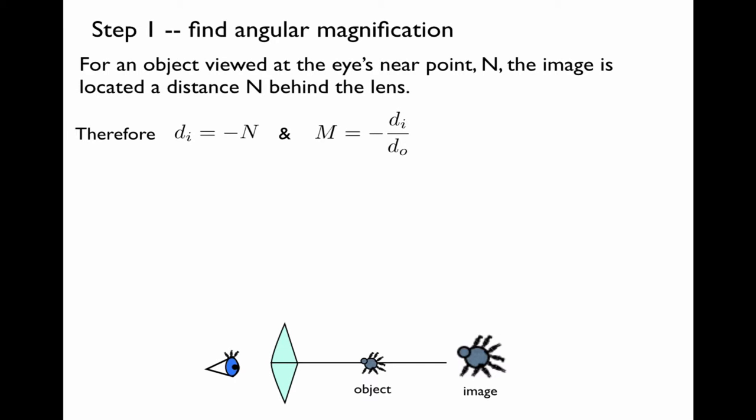This is the formula for angular magnification: negative di over do. We just said that di is negative N, so this is N over distance to the object. We don't yet know the distance to the object. We only know the focal length of the lens.